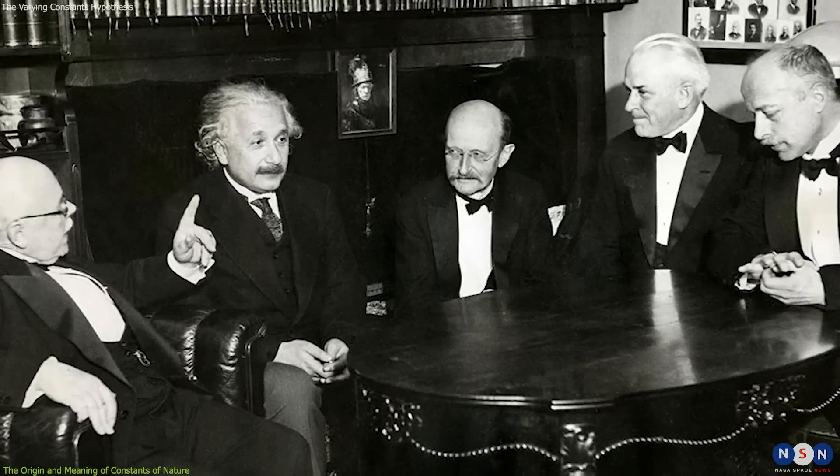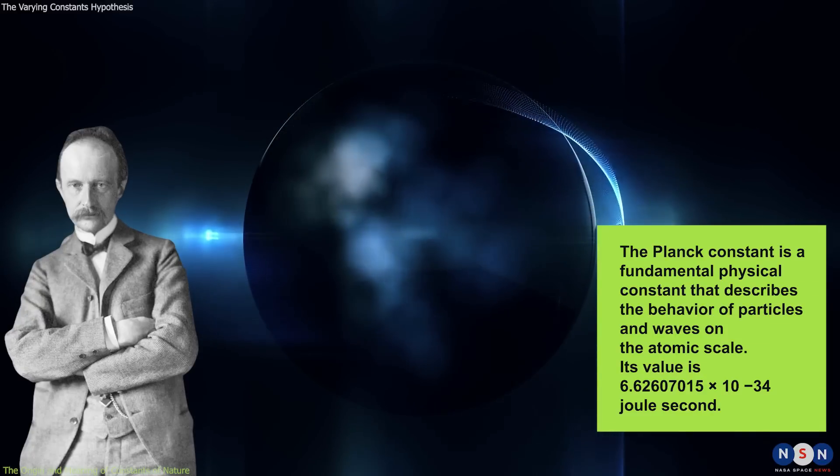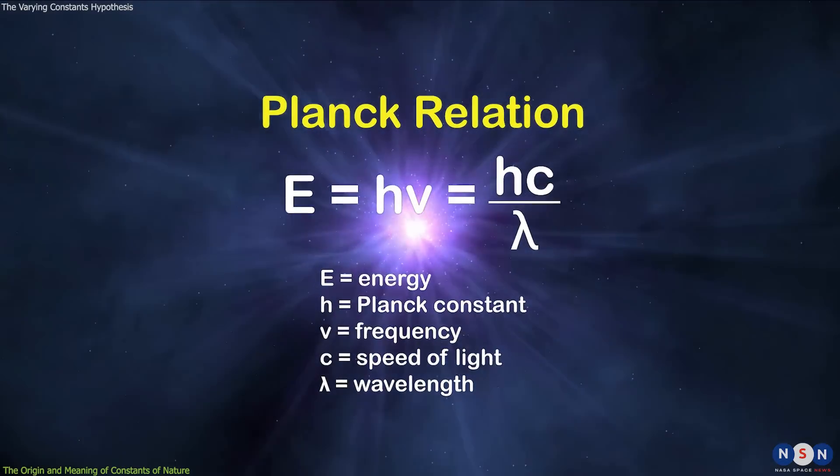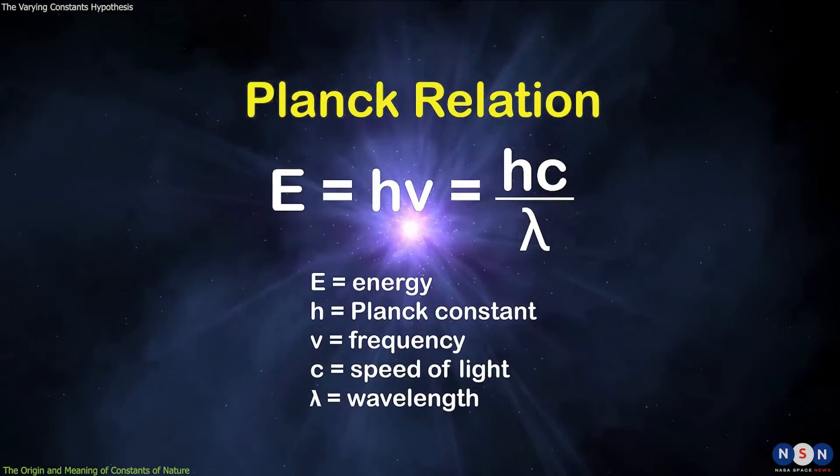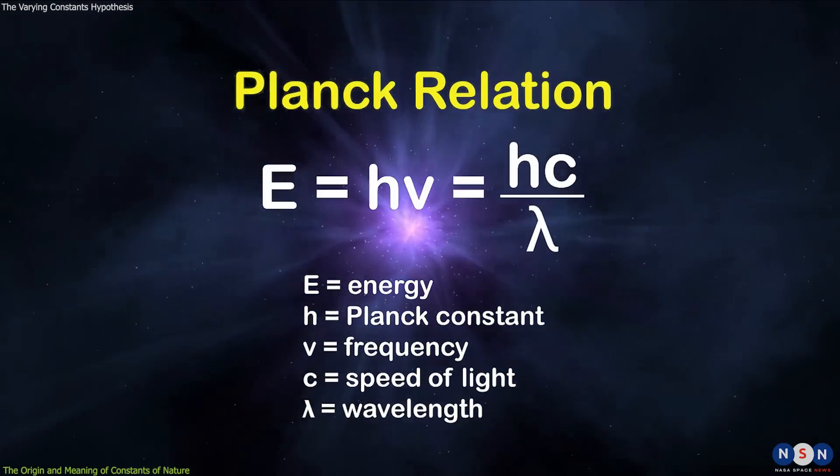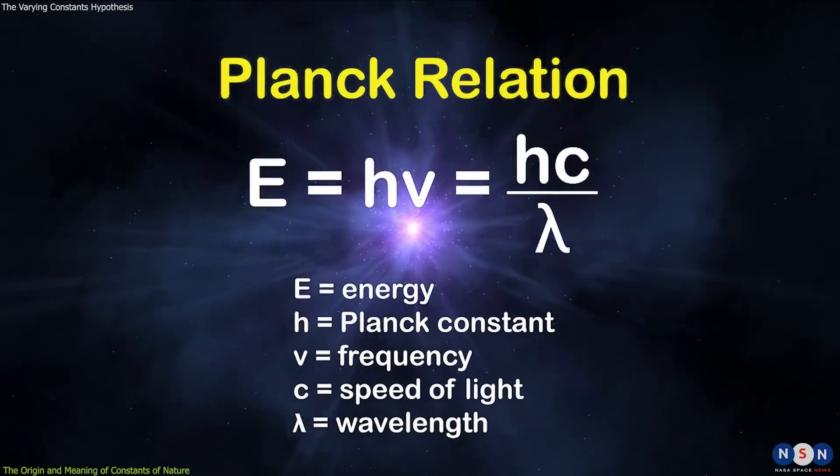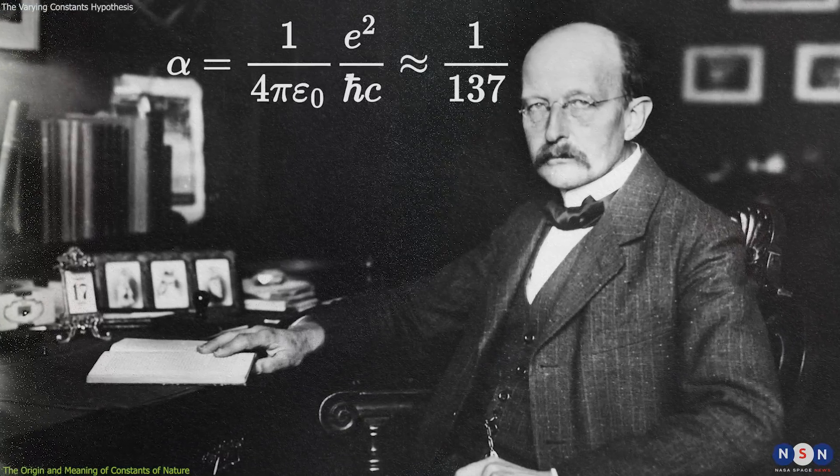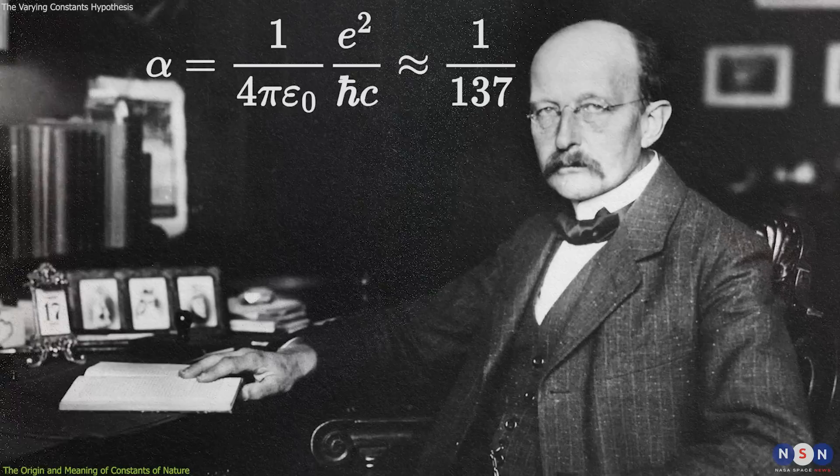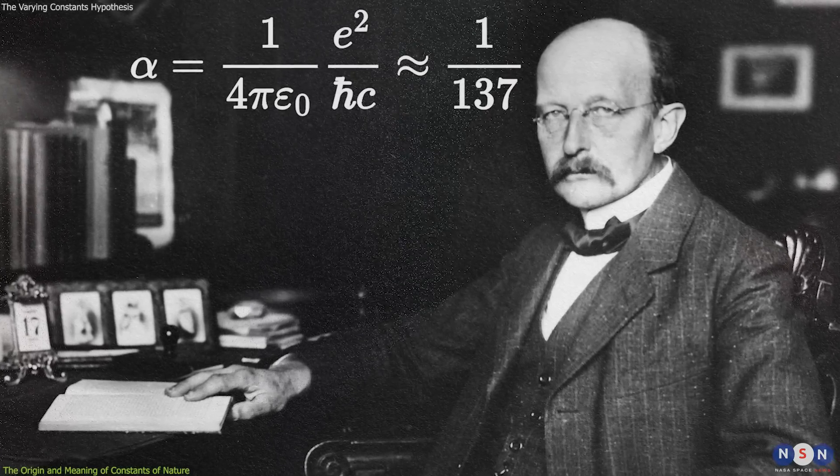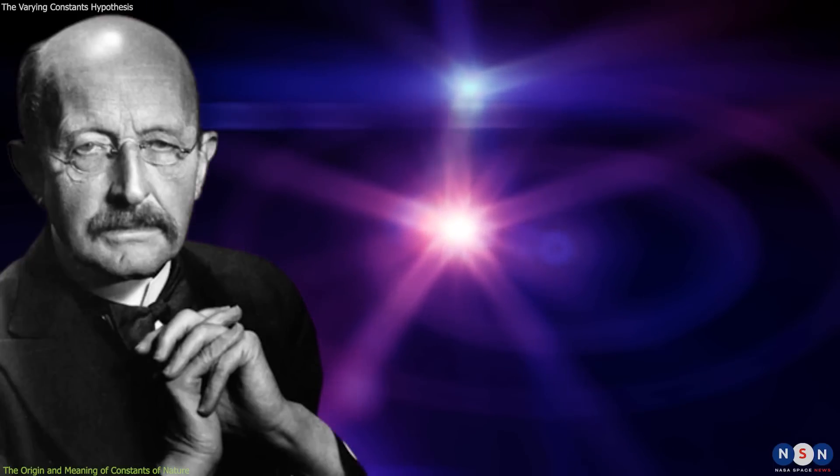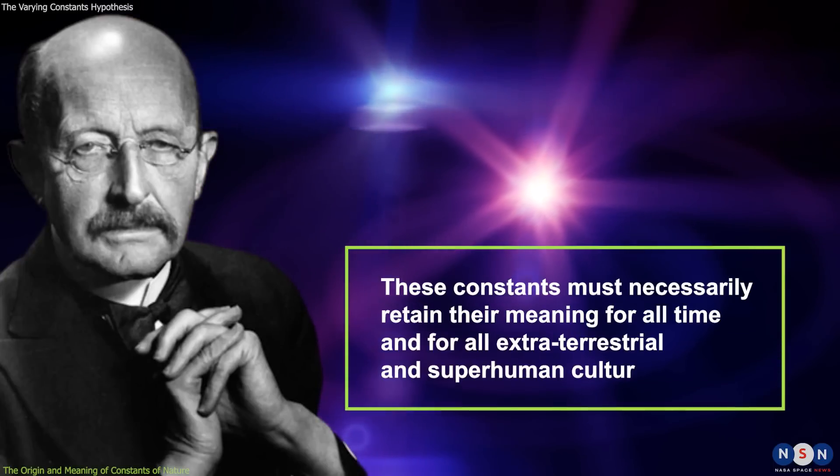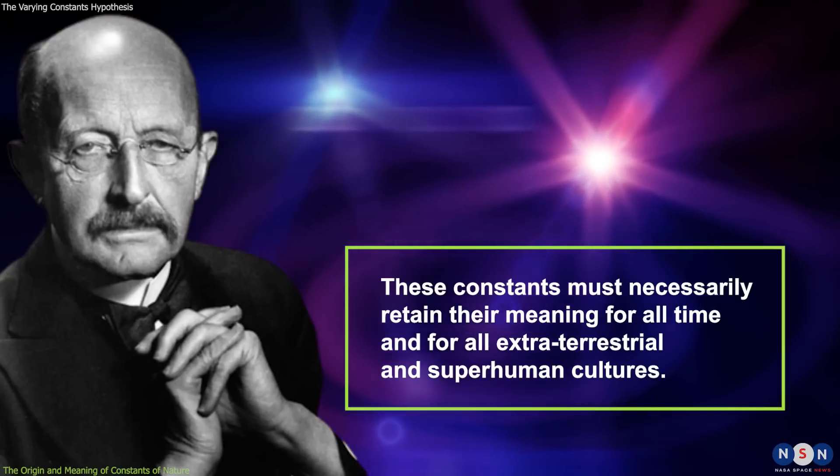One of the first physicists to recognize the importance of these constants was Max Planck, who discovered the quantum of action, now known as the Planck constant, in 1900. He realized that by combining this constant with other constants, such as the speed of light and the gravitational constant, he could define natural units of length, time, mass, and energy that were universal and objective. He also noticed that some combinations of these constants gave rise to dimensionless numbers, such as the fine structure constant, that were pure numbers and did not depend on any system of units. Planck believed that these constants were truly constant and detached from the human mind. He said that they must necessarily retain their meaning for all time and for all extraterrestrial and superhuman cultures. He also speculated that these constants might reveal some deeper truths about nature and its symmetries.